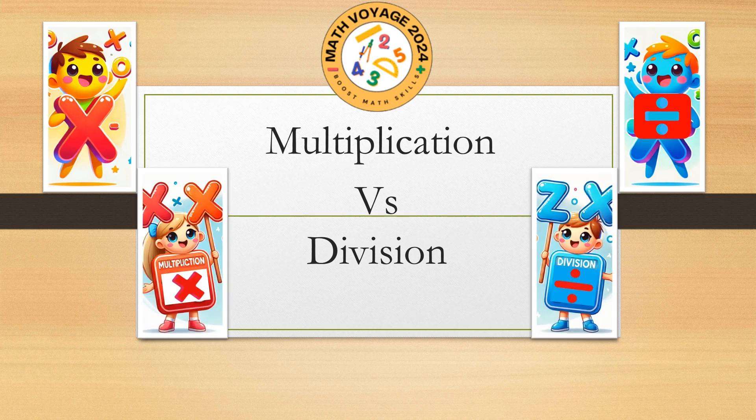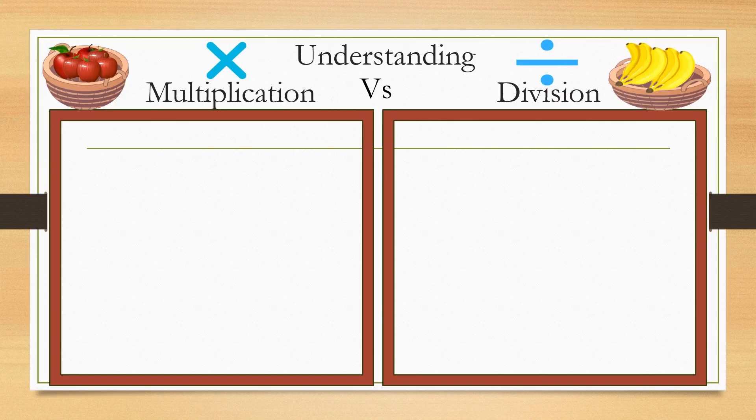Multiplication and division are inverses of each other. This means that they undo each other's work. If you multiply and then divide, or divide and then multiply, you end up back where you started. Let us try to understand multiplication versus division.